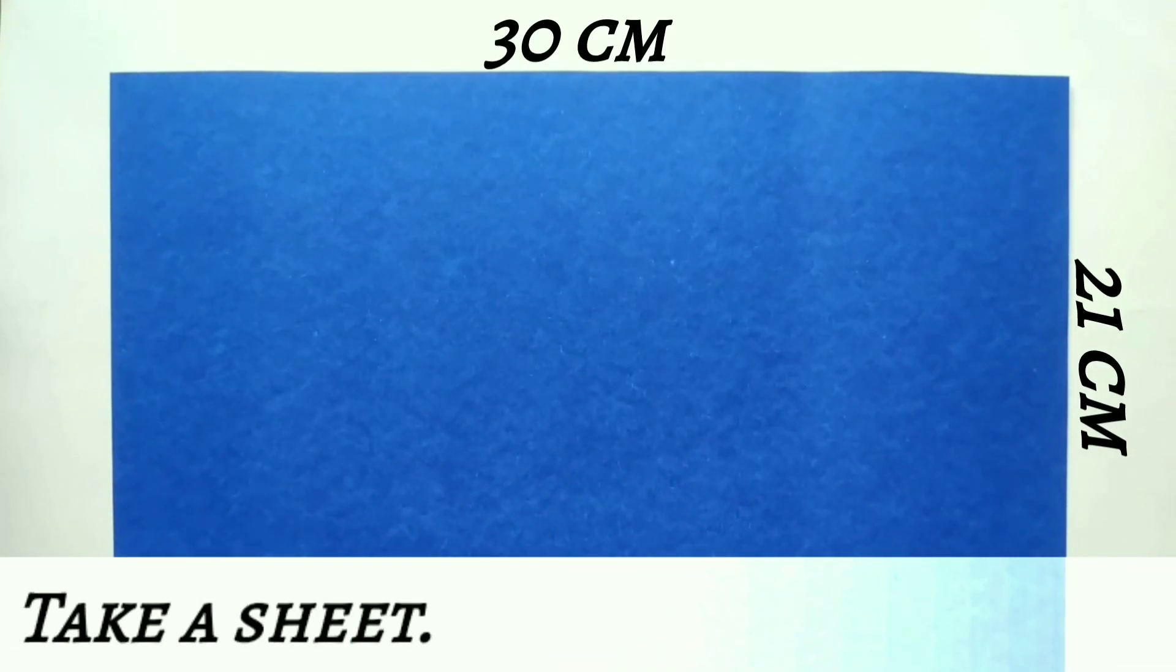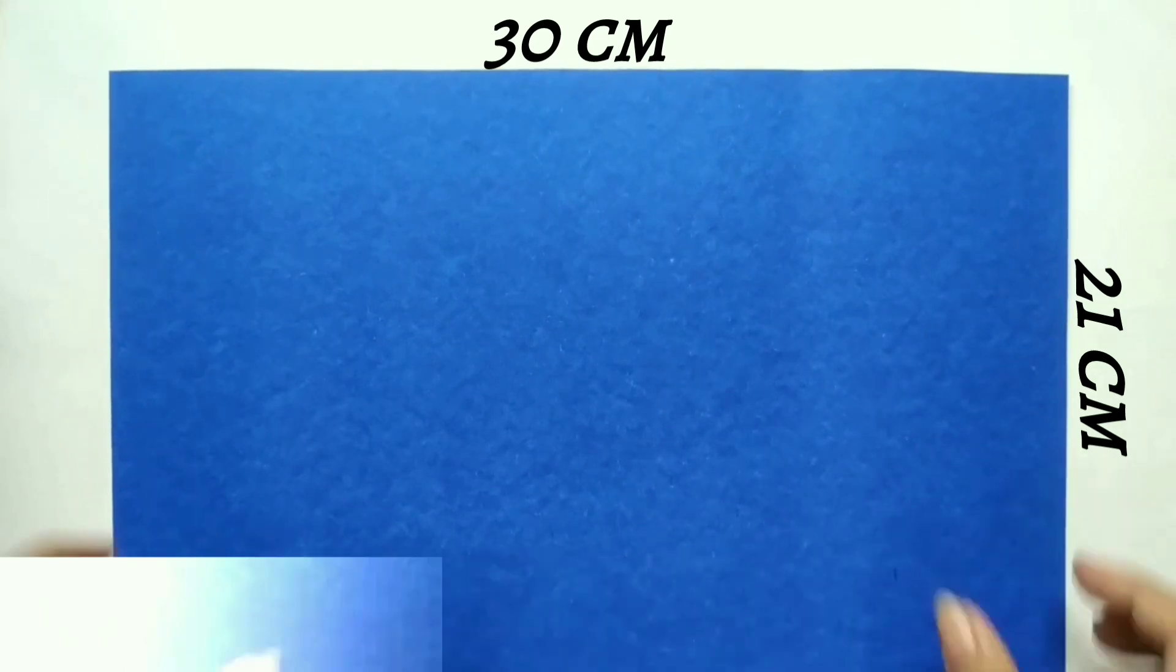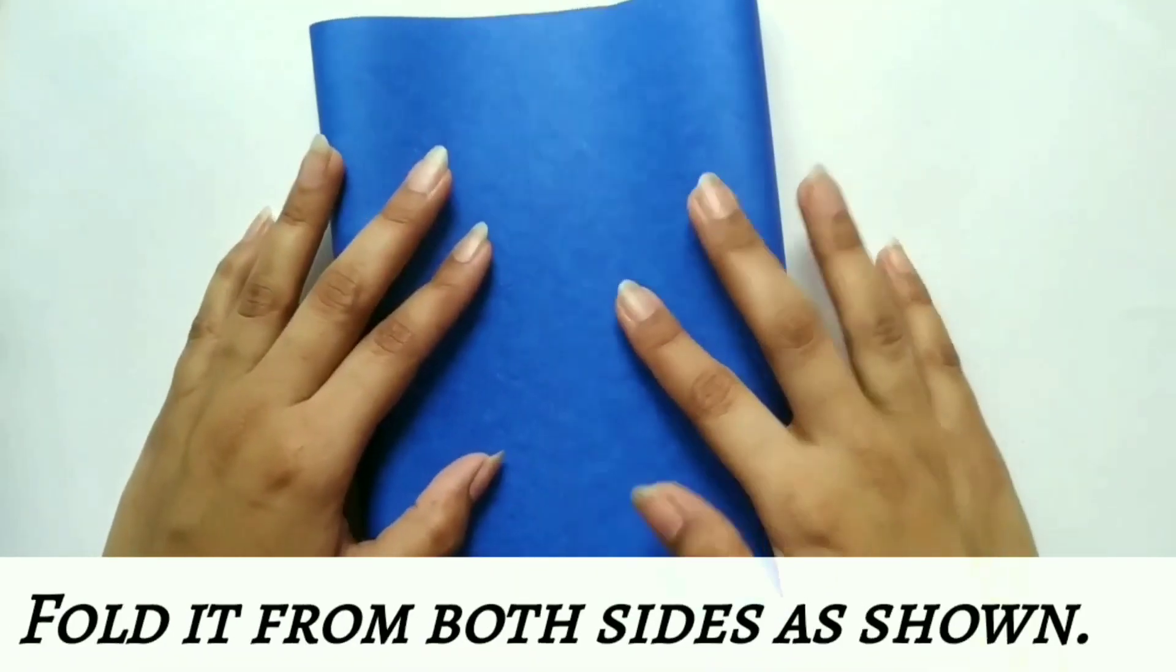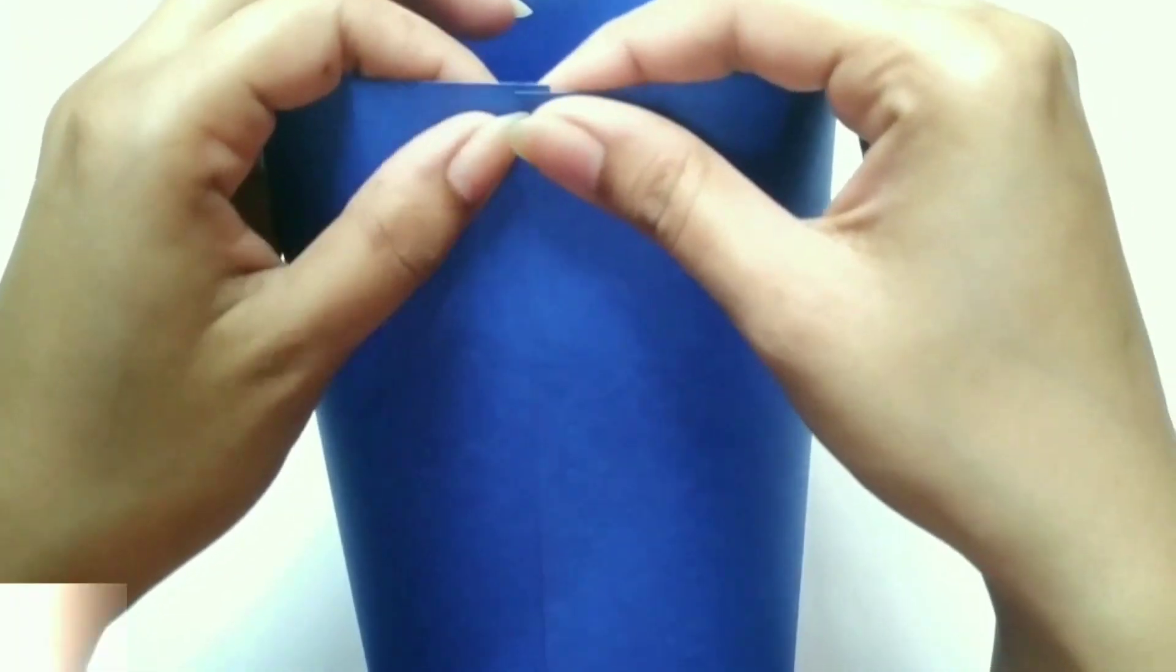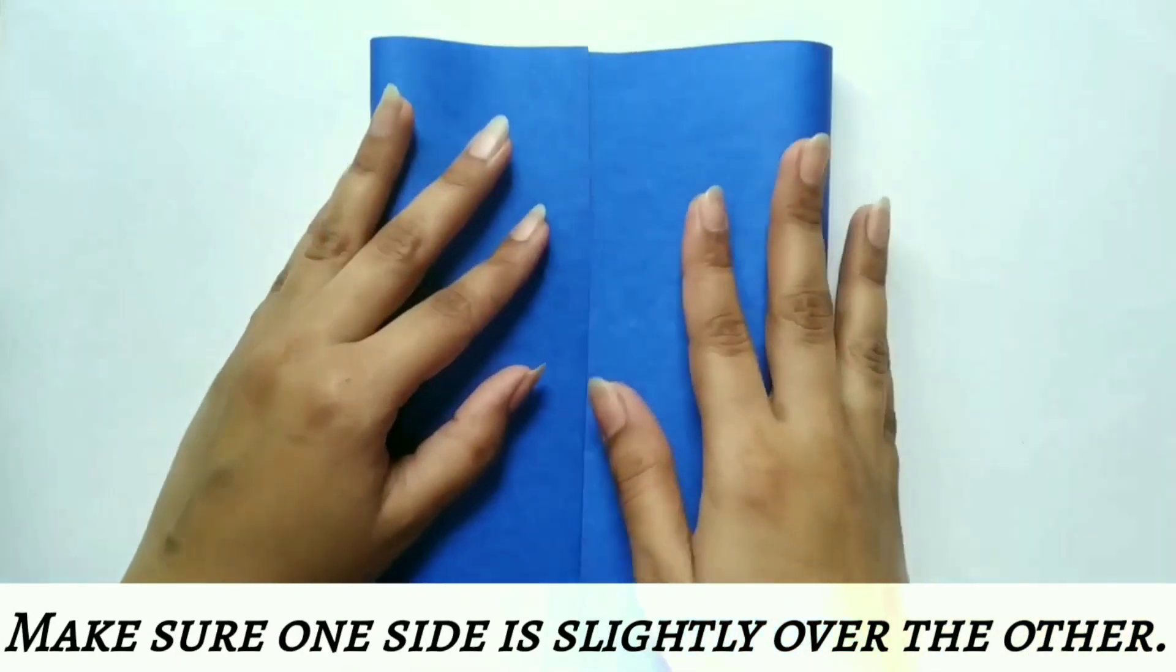Take a sheet of these dimensions. Fold the sheet as shown from both sides. Also, make sure that one side overlaps each other as shown.